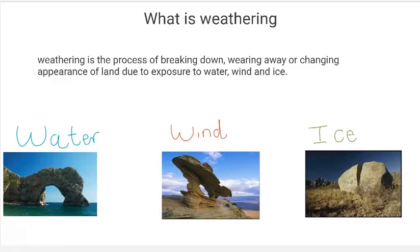In the last video, we discussed wind weathering and how over time, wind picks up small particles of rock and sand and hits them against larger pieces of rock or earth. And over time, as wind blows these smaller particles into larger rocks and other parts of earth, they slowly wear it down. And today, we're going to be talking about the final kind of weathering, which is weathering through ice.